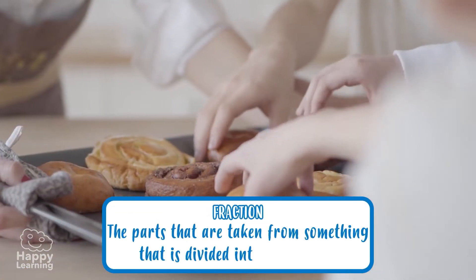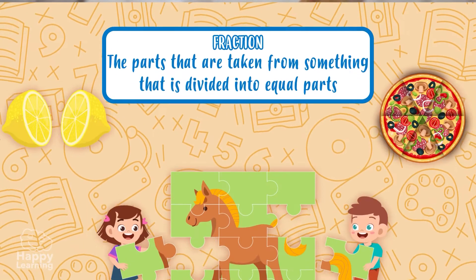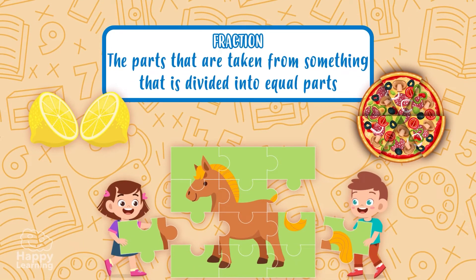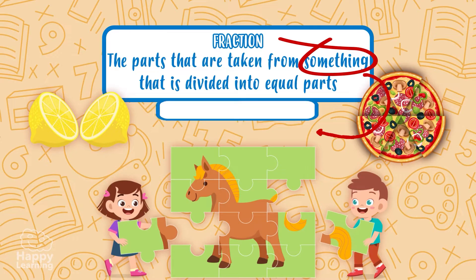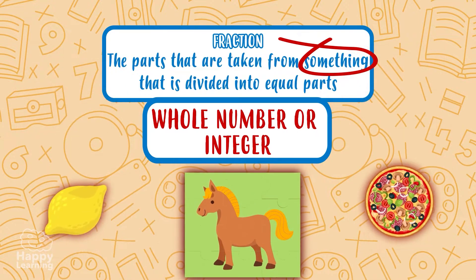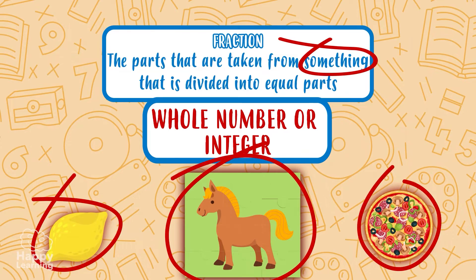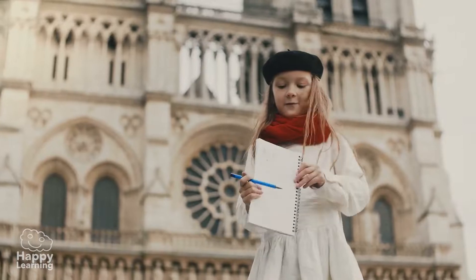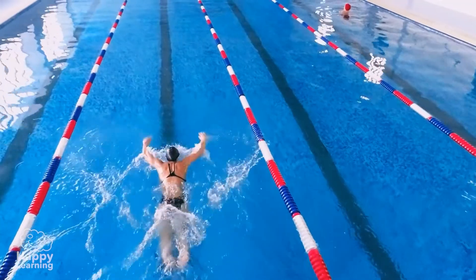That something is divided into equal parts. In mathematics it is called a whole number or an integer. A whole number can be anything — a pizza, a drawing, a swimming pool.